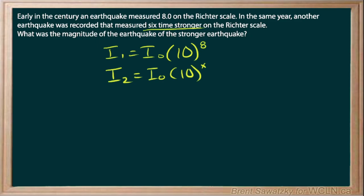Now we are told that the second one is six times stronger than the first. So that tells us that if we do I₂ over I₁, so let's just fill that in. And we're told that that is six. That is, one is six times more intense than the other.